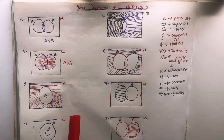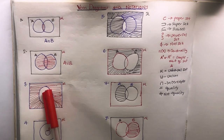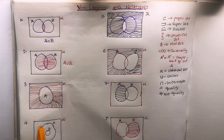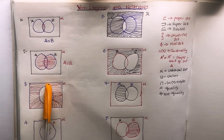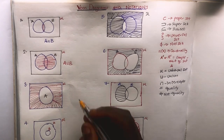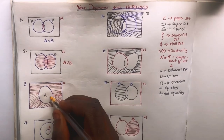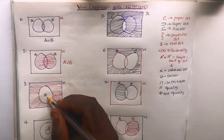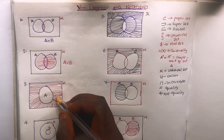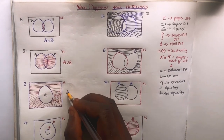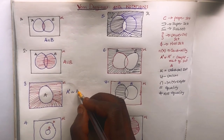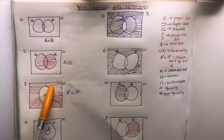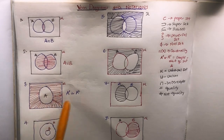The third case: you have set A, and everything outside of it is shaded while the inside of A is left. This outside shaded part is known as A complement. You write it as A with a bar on top — A complement.